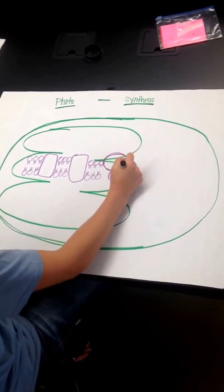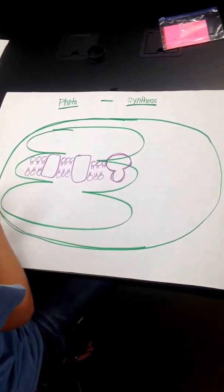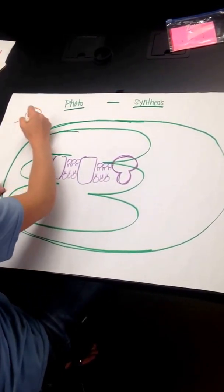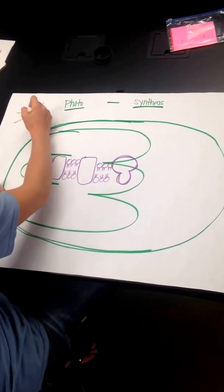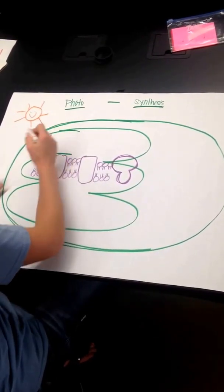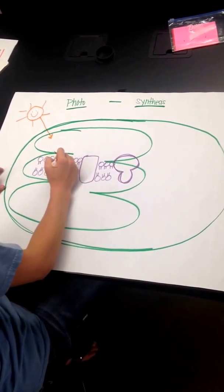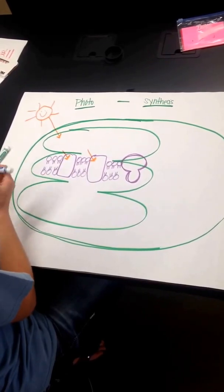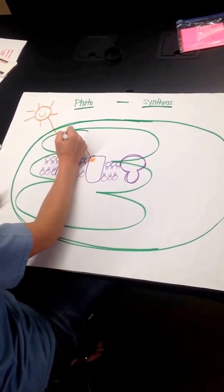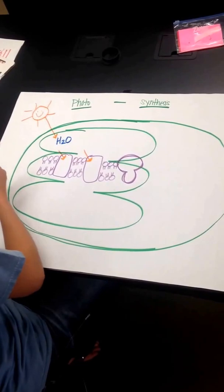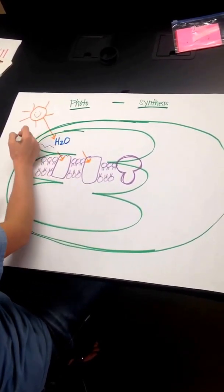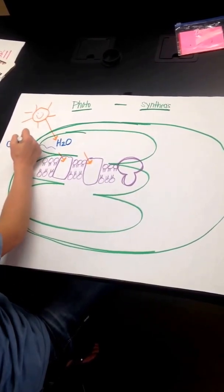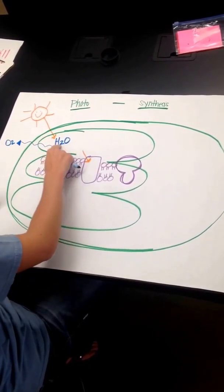So the first thing, in order for the light reaction to occur, we're going to need sunlight to come in. Sunlight to come in and split water. And sunlight actually hits these photosystems also. Sunlight is going to come in and split water. And when we split water, immediately what's going to happen is the oxygen is going to be released as a gas, a waste product. It goes out of the stomata.